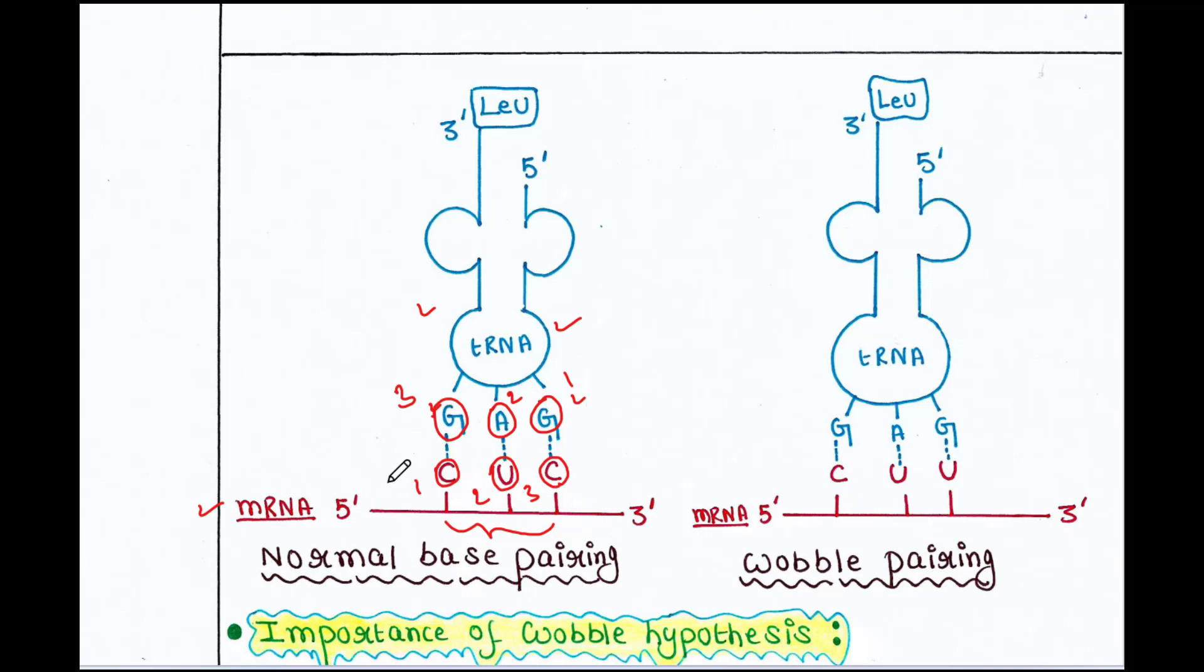The five prime nucleotide is the first. This C pairs with G. And the U pairs with A. And the C pairs with G. So, we can see all three base pairings are common Watson-Crick base pairing. So, here we don't have any issue. Now, we will see this wobble pairing.